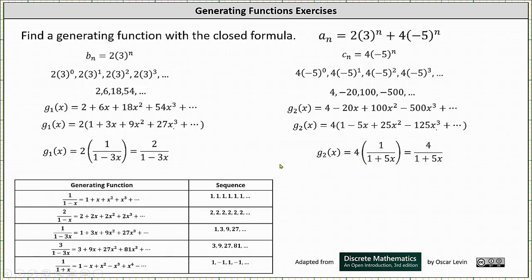To determine the generating function for the given closed formula, we simply sum g1(x) and g2(x). This gives us the generating function g(x) equals 2/(1 − 3x) plus 4/(1 + 5x).